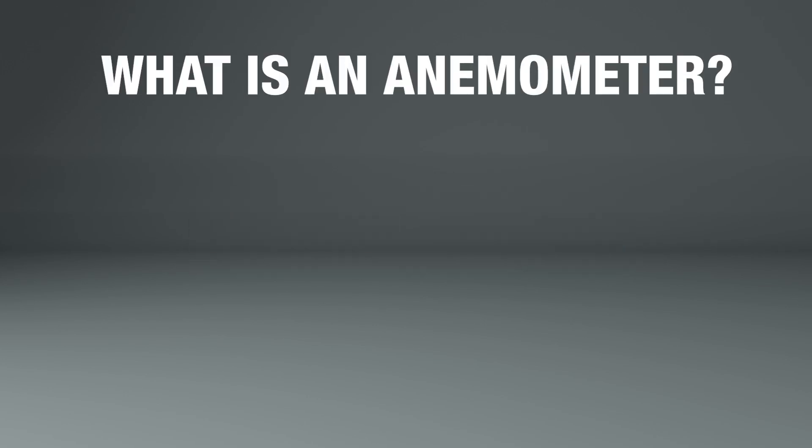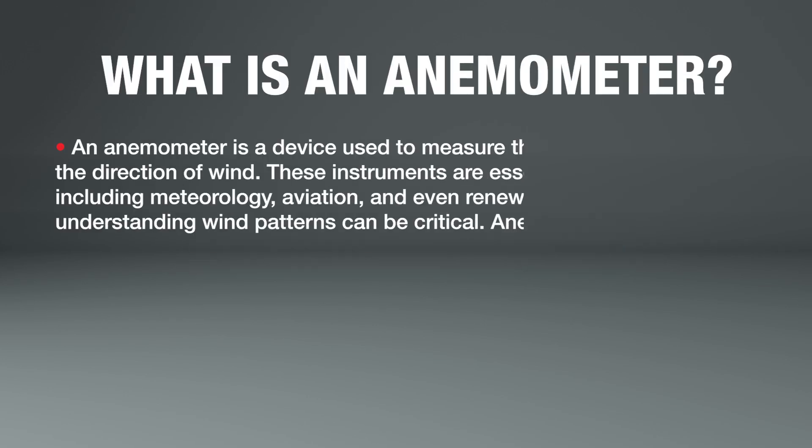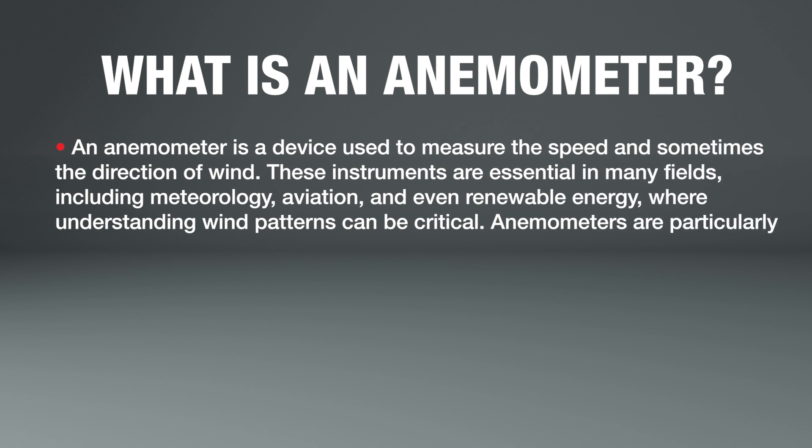What is an anemometer? An anemometer is a device used to measure the speed and sometimes the direction of wind. These instruments are essential in many fields, including meteorology, aviation, and even renewable energy, where understanding wind patterns can be critical.